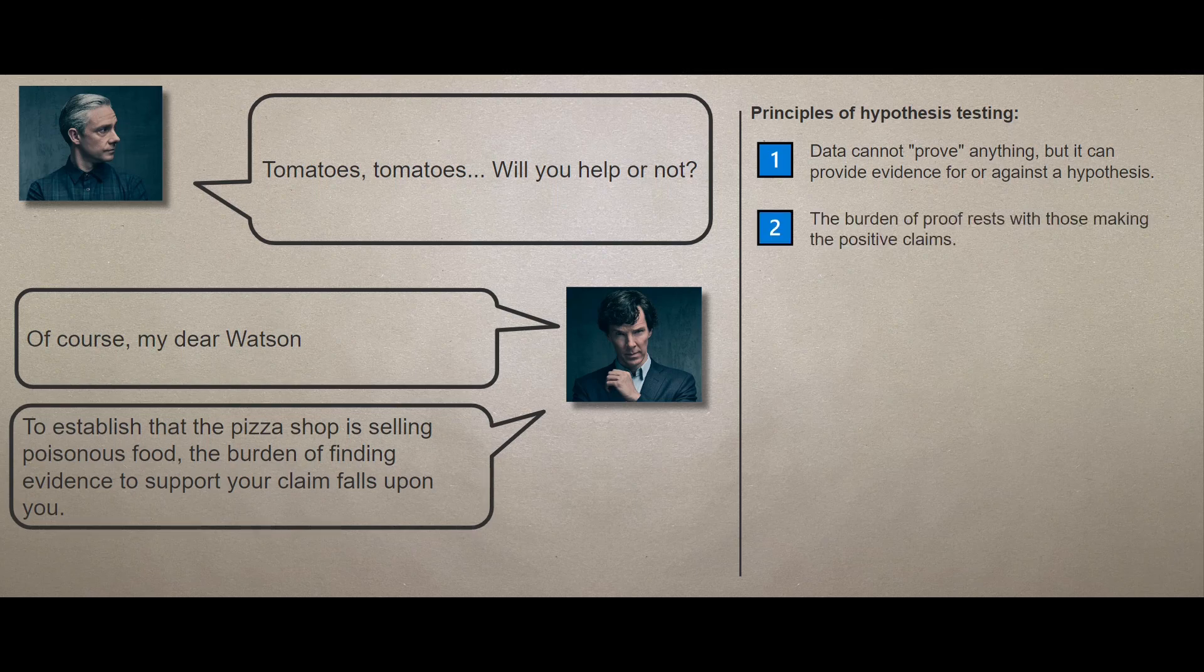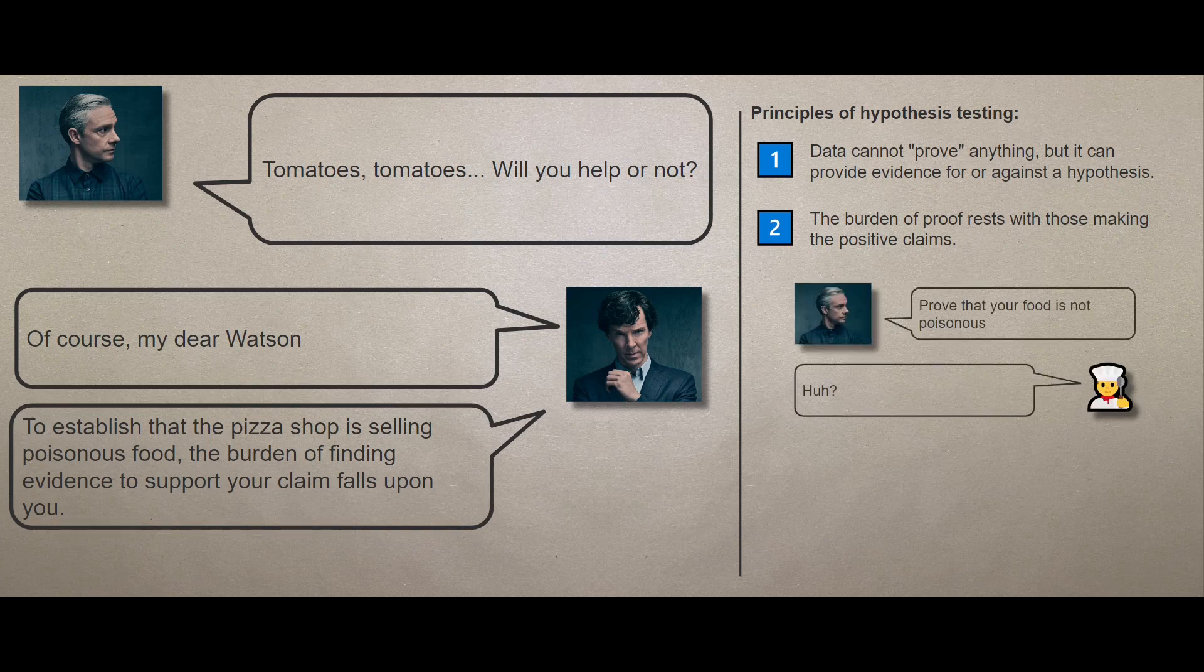To establish that the pizza shop is selling poisonous food, the burden of finding evidence to support your claim falls upon you. Sherlock just emphasized the second principle of hypothesis testing. The burden of proof rests with those making the positive claims.